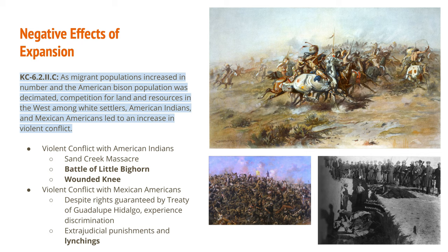There was also violent conflict with Mexican Americans. Despite the rights guaranteed by the Treaty of Guadalupe Hidalgo in the 1840s, they continued to experience discrimination in the Southwest and were subject to extrajudicial punishments and lynchings. One difficulty in identifying these victims is that when lynching statistics were compiled, Mexican Americans were categorized as white. So lynching statistics showing white victims from the late 19th century likely include Mexican Americans, who were being lynched for similar reasons as African Americans — posing an economic or social threat to the white population and the older racial status quo.